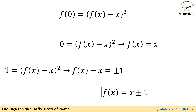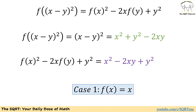We have two cases. If f of 0 is 0, then f of x equals x. On the other hand, if f of 0 is 1, then we can have two sub-cases: f of x equals x plus 1, or f of x equals x minus 1. We need to verify all three cases.